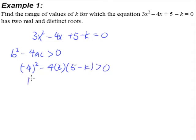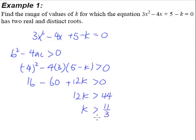When we work this out, this will give us 16 minus 60 plus 12k is greater than 0. When you shift things a little bit, you have 12k is greater than 44, and therefore k will be greater than 11 over 3.